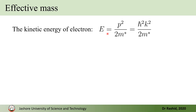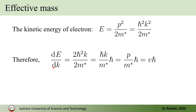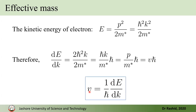Since E = ℏ²k²/2m, if we take the derivative of E with respect to k, we get ℏ²k/m multiplied with 1/ℏ, which is nothing but the velocity. So we have another expression for the velocity: v = (1/ℏ)(dE/dk), that is, one over ℏ multiplied by the rate of change of energy with respect to wave vector.